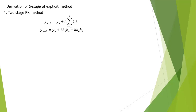For stage 2, y_(n+1) equals y_n plus h times the summation from i equals 1 to 2 of b_i k_i. Expanding the summation gives y_(n+1) equals y_n plus h·b₁·k₁ plus h·b₂·k₂. Here k₁ equals f(t_n, y_n), and k₂ equals f(t_n plus c₂h, y_n plus h·a₂₁·k₁), since a₂₂ equals 0 for the explicit method.